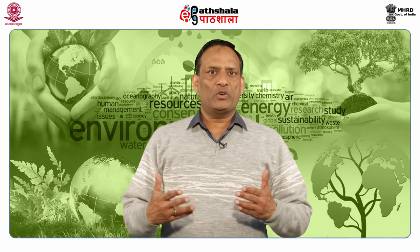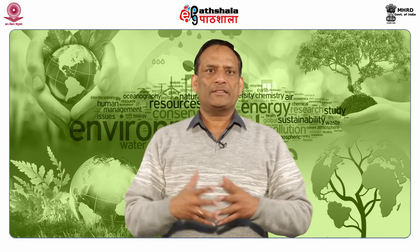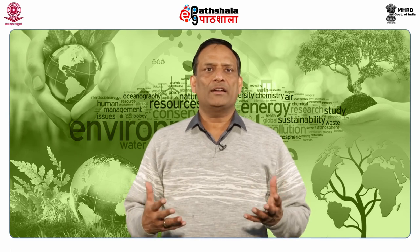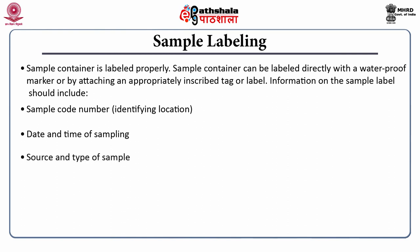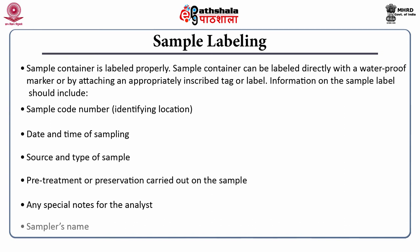Labelling of samples is very important. If we don't do proper labelling, samples may get mixed and all data will be useless. Sample containers can be labelled directly with a waterproof marker or by attaching an inscribed tag or label. Information on the sample label should include: sample code number for identification of location, date and time of sampling, source and type of sample, pre-treatment or preservation carried out, any special notes for the analyst, and sampler's name.